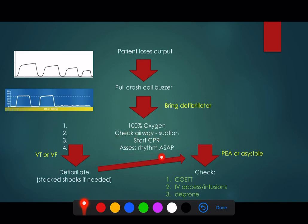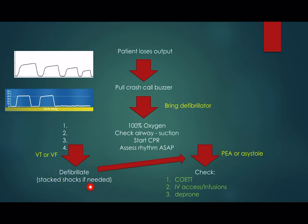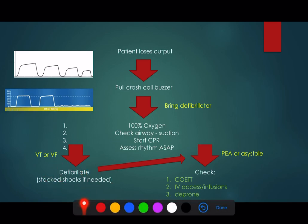Whilst you're doing CPR, someone should have brought the defibrillator and assessed the rhythm as soon as possible. If the rhythm shows VF or VT, then it is standard defibrillation. You can stack those shocks if you need to, but I would generally suggest going with the standard ALS algorithm, unless you're an experienced registrar or consultant in intensive care who can slightly deviate and do things like stacked shocks if you know the exact pathophysiology of what's going on.